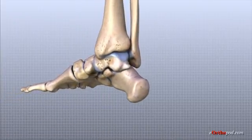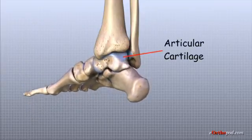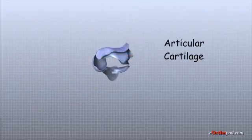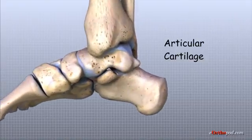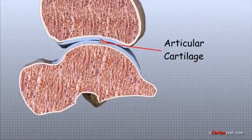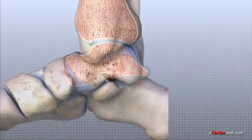Inside the ankle joint, the bones are covered with a slick material called articular cartilage. Articular cartilage is the material that allows the bones to move smoothly against one another in the joints of the body. The cartilage lining is about one quarter of an inch thick in most joints that carry body weight, such as the ankle, hip, or knee. It is soft enough to allow for shock absorption, but tough enough to last a lifetime, as long as it is not injured.